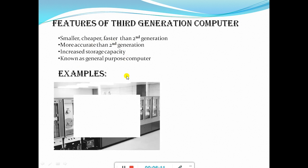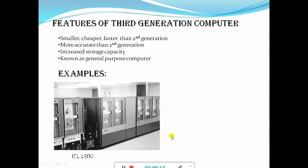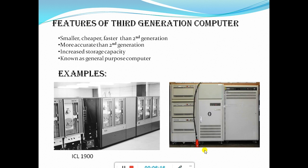Examples of third generation computers: ICL 1900 and VAX 750. You can see that from the first to the second to the third generation, the size is now decreasing. In the third generation, the size is quite smaller compared to the first and second generation. So one clear trend is that the size is decreasing as the generation increases.